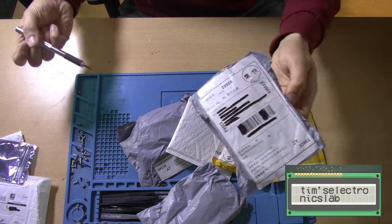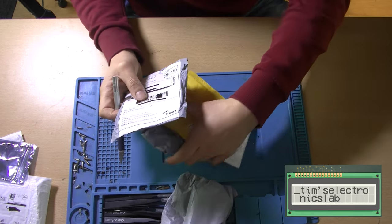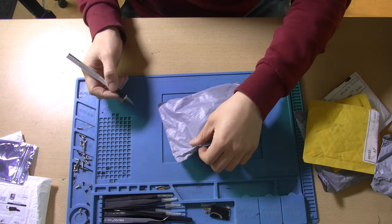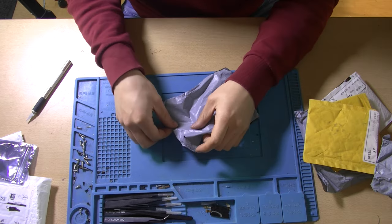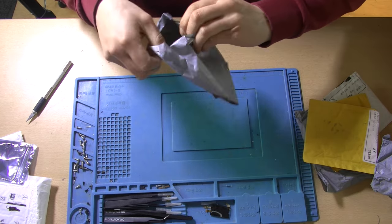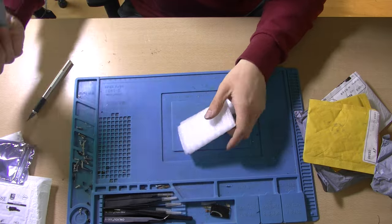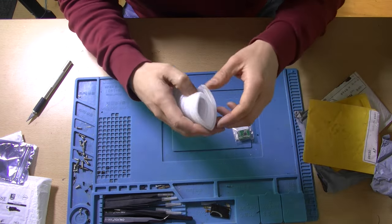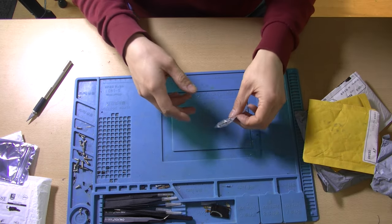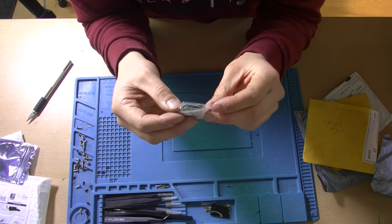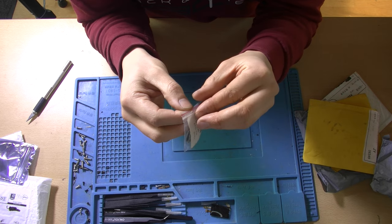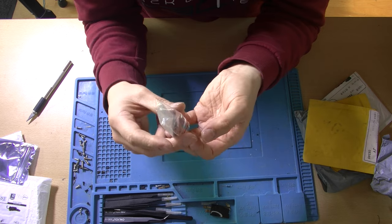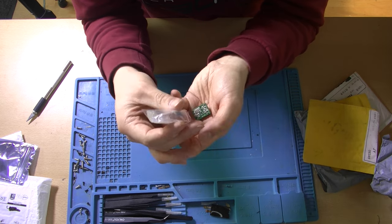Start with this one. Tiny little package. Let's check it out. It's empty. Oh, it fell out of the packaging. So it's this guy, this little guy. It's quite a tiny module actually. Let's remove it from the packaging.